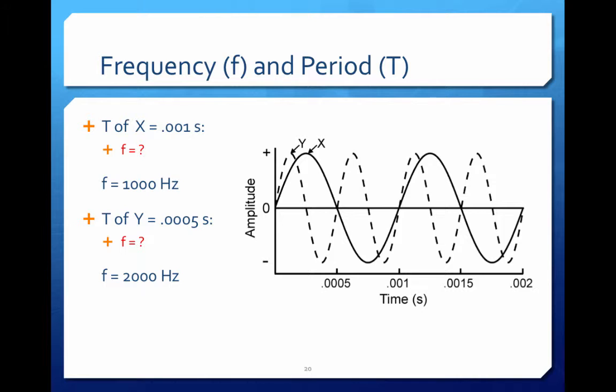The dashed line, y, is higher frequency than the solid line, x. Y has completed one full cycle of vibration in half the time that x has completed one cycle of vibration.